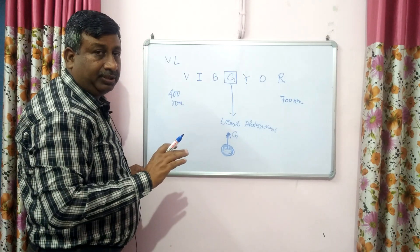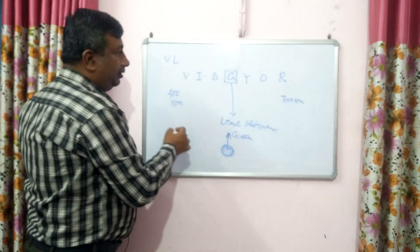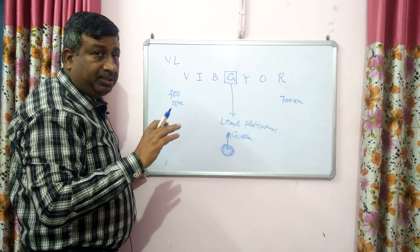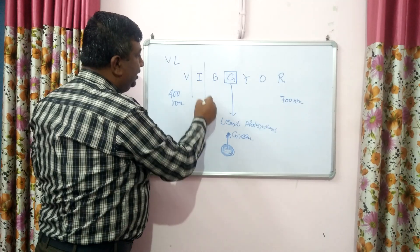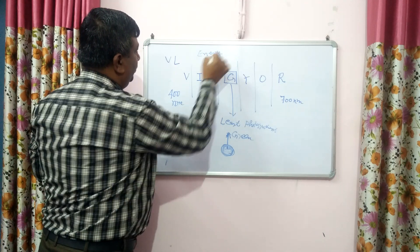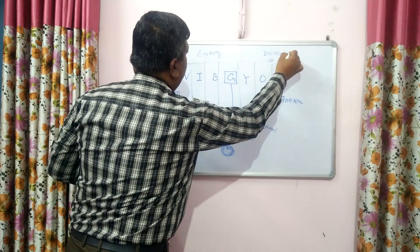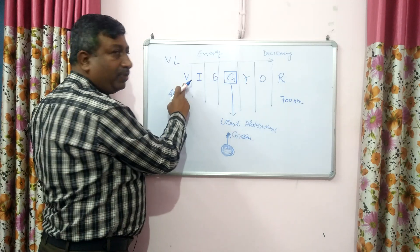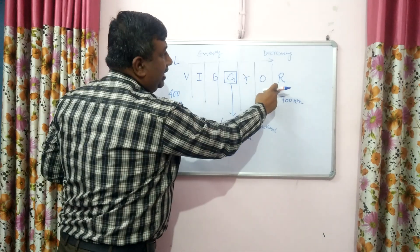So green light is not absorbed by chlorophyll and is not involved in photosynthesis. Violet, indigo, blue, and red are involved in photosynthesis effectively. But the whole spectrum is necessary for maximum photosynthesis. Within the visible spectrum, energy level decreases as wavelength increases: violet has more energy than indigo, indigo more than blue, blue more than green, and red has low energy. So energy decreases in the direction from violet toward red.